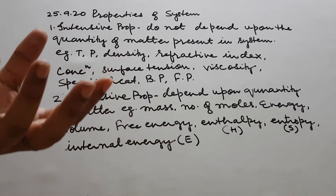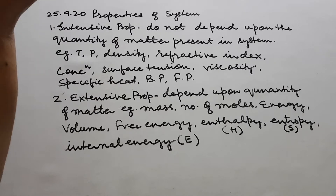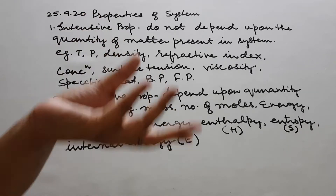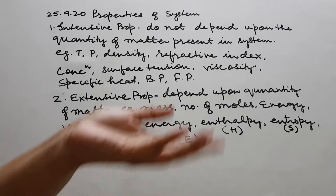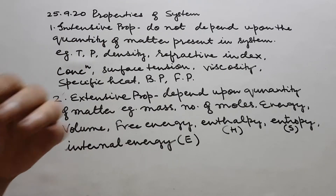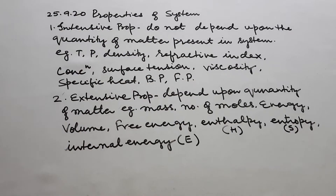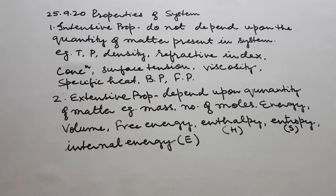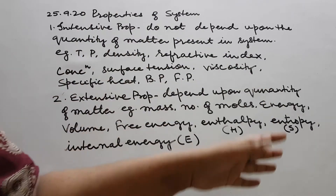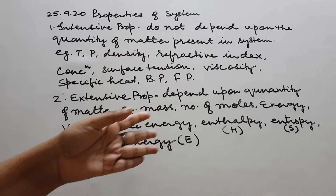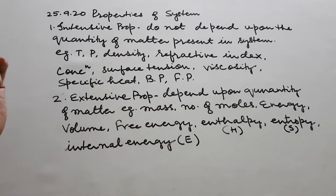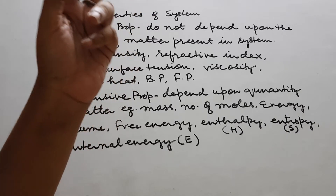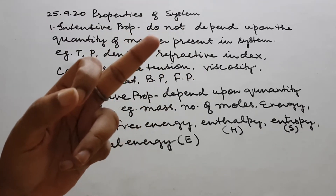Suppose you have glucose and you want a certain amount of energy — you will take a fixed amount of glucose. If you want more energy, you will have to take more glucose. So energy in any form is an extensive property, except specific heat, because specific heat is per gram per degree Celsius.